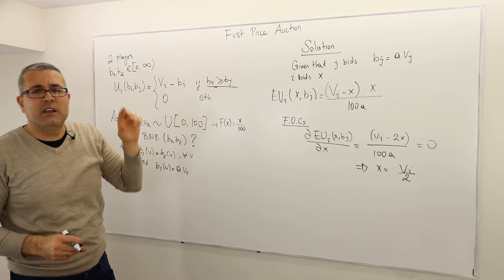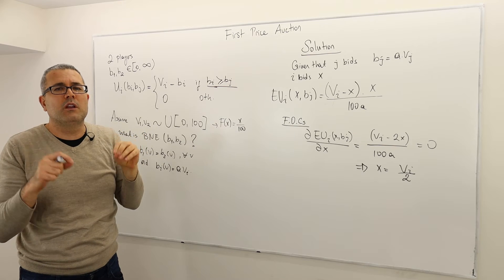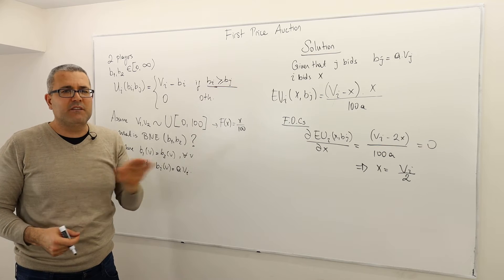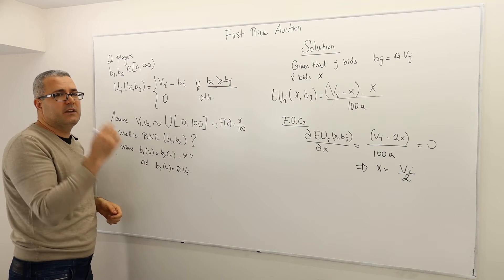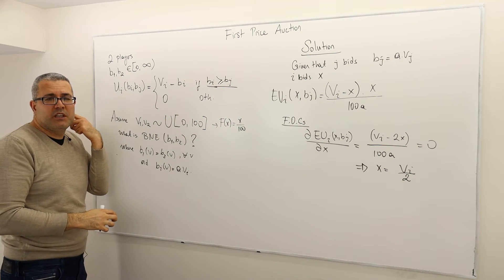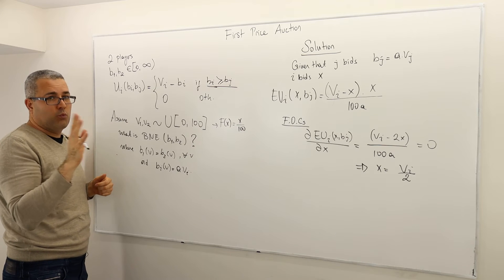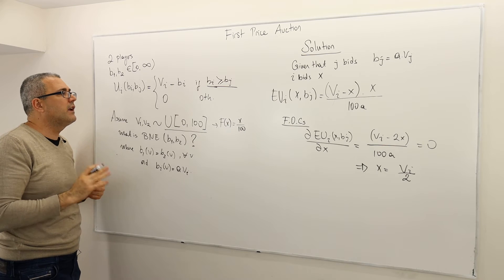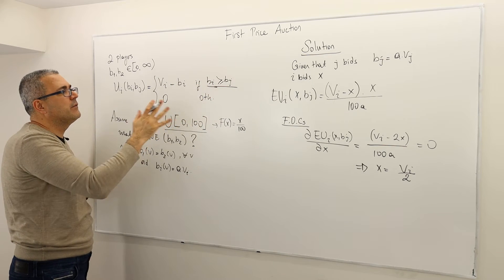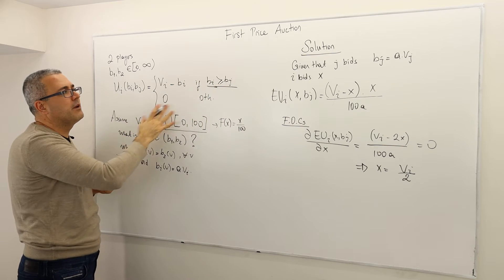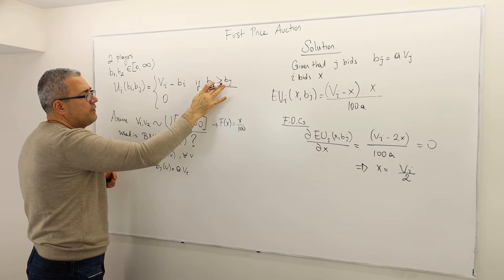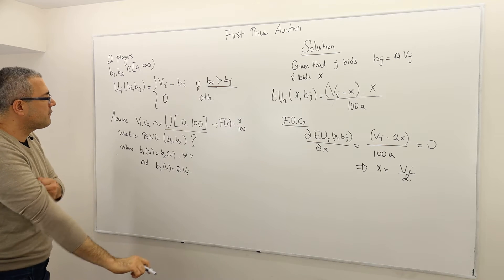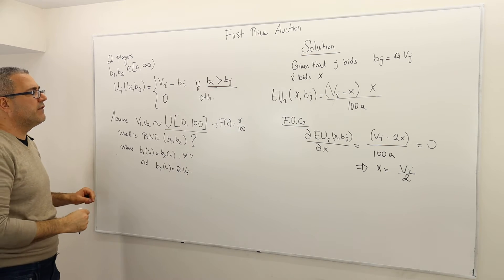You may ask about the equality case — what if the bids of player one and two are equal, so who is really winning? Well, this is irrelevant, because the bids being exactly equal is a zero probability event. We are going to assume a continuous probability distribution, so without loss of generality we can ignore the equality sign, since the equality is a zero probability event in this environment.